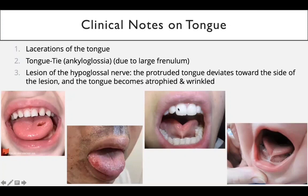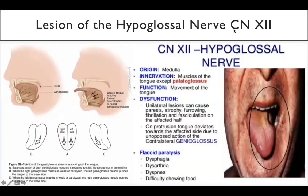In a lesion of the hypoglossal nerve, the protruding tongue deviates toward the side of the lesion. So a right-side lesion means the tongue goes to the right, and a left-side lesion means the tongue goes to the left. The tongue also becomes atrophied and wrinkled due to denervation. The action of the genioglossus muscle is to stick the tongue out of the mouth.